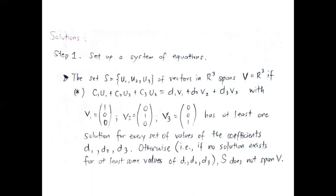If (1★) c sub 1 · u sub 1 plus c sub 2 · u sub 2 plus c sub 3 · u sub 3 equals d sub 1 · d1 plus d sub 2 · d2 plus d sub 3 · d3, with d sub 1 equals (1,0,0), d sub 2 equals (0,1,0), d sub 3 equals (0,0,1), has at least one solution for every set of values of the coefficients d sub 1, d sub 2, and d sub 3.